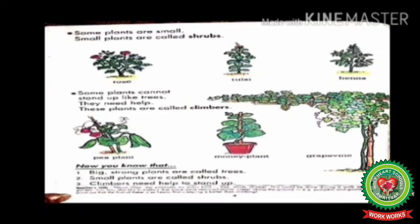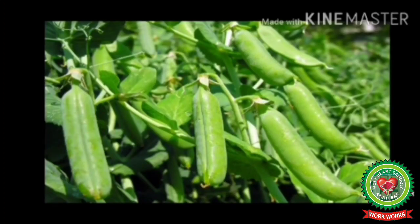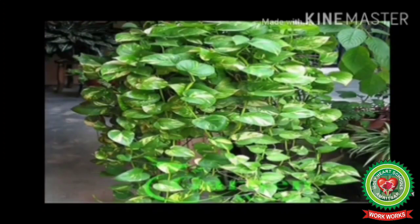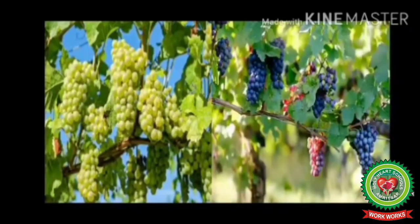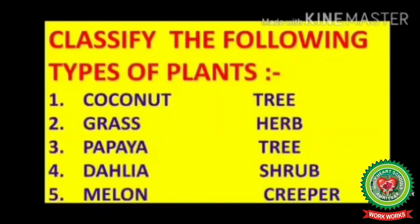Some plants cannot stand up like trees — they need help. These plants are called climbers. Pea plant, money plant, grapevine — this is a pea plant, it needs help or support to stand, so it is a climber. Money plant is a very common climber you have seen at your homes — it also needs support to stand, so it is a climber. Grapevine also needs support to stand, so it is a climber.